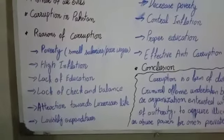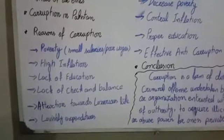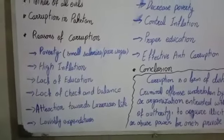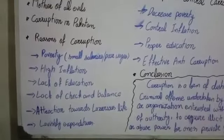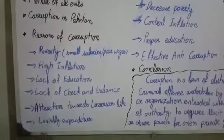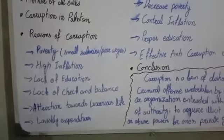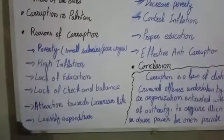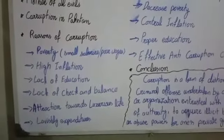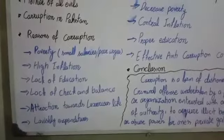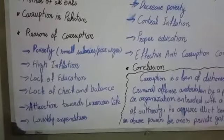لوگوں کو جو moral education ملنی چاہیے تھی وہ نہیں دی جا رہی — کہ وہ کس طریقے سے اپنے اور اپنے ملک کا نقصان کر رہے ہیں۔ اس کے علاوہ proper check and balance نہیں ہے — اداروں پر proper check and balance نہ ہونے کی وجہ سے مختلف اداروں میں corruption ہو رہی ہے۔